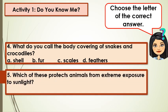Number 5: Which of these protects animals from extreme exposure to sunlight? A. Feather, B. Fur, C. Scales, D. Skin.